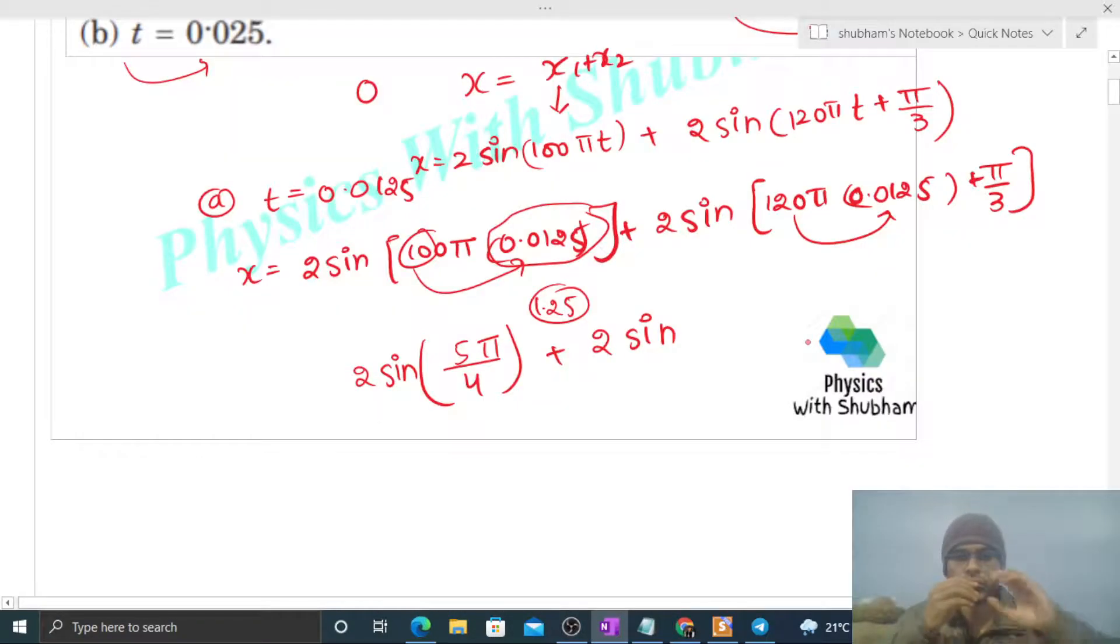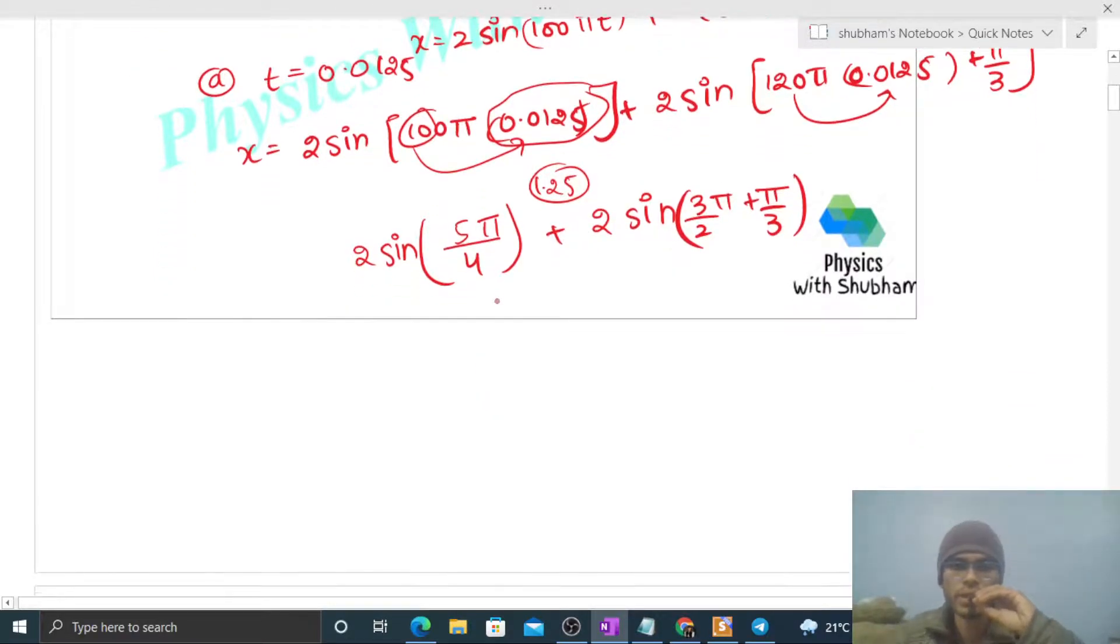It's 1.5, so that is 3 by 2 pi plus pi by 3. Now we have to simplify. 5 pi by 4 we can write as pi plus pi by 4, and sin of pi plus pi by 4 is minus sin pi by 4, that is minus 1 upon root 2.